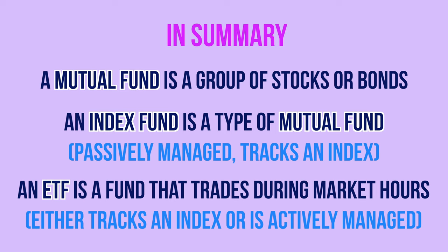So in summary: a mutual fund is a group of stocks or bonds that are bought and sold together. An index fund is a type of mutual fund — it's passively managed and it tracks an index. And an ETF is just a fund that trades during open market hours; it either tracks an index or it's actively managed, but only about 2% of ETFs are. That's all — have a wonderful day.